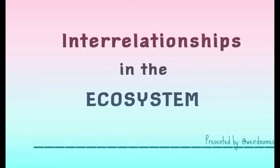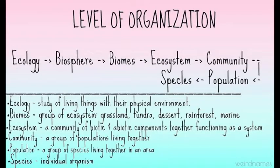Interrelationships in the Ecosystem. The levels of organization in ecology are: Biosphere, Biomes, Ecosystem, Community, Population, and Species.